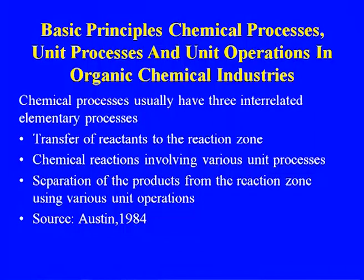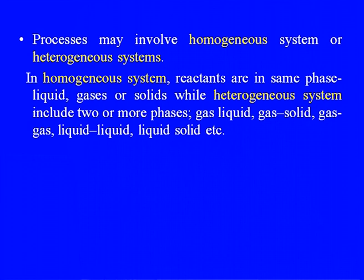A basic principle of the chemical process industry: chemical processes usually have three interrelated elementary steps — transfer of the reactant to the reaction zone, chemical reaction involving various unit processes, and then the separation of the products from the reaction zone using various unit operations. Processes may involve homogeneous or heterogeneous systems.